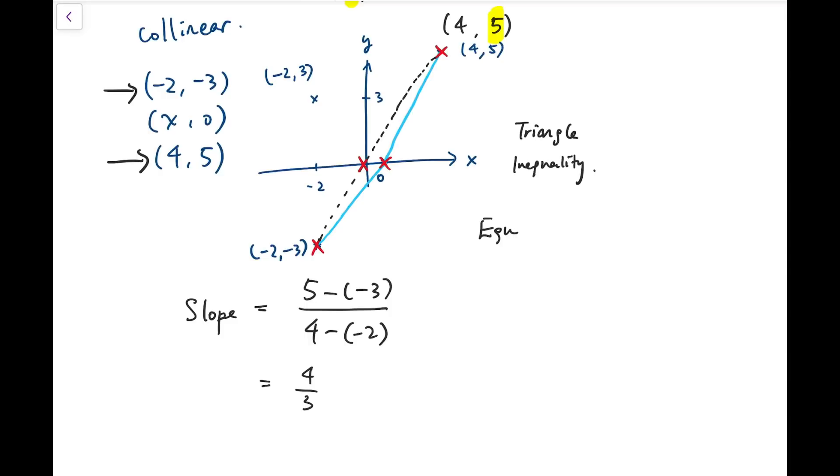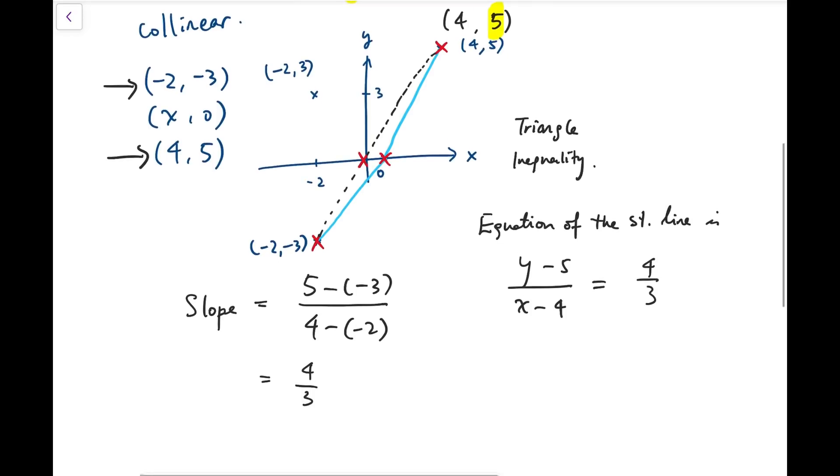So the equation of the straight line is y minus 5 over x minus 4. And that's equal to 4 over 3. This is the point slope form. So y minus 5 equals 4 over 3 times x minus 4. And simplifying, we have y equals 4 over 3x minus 1 over 3.